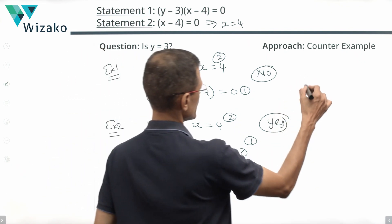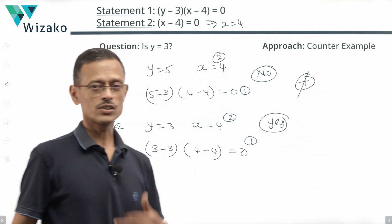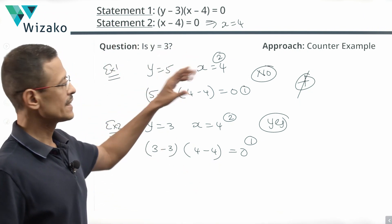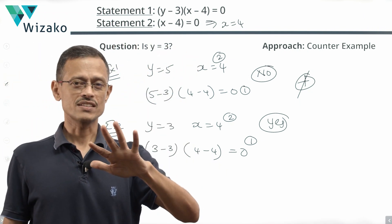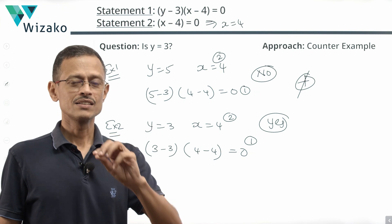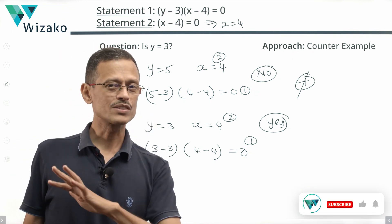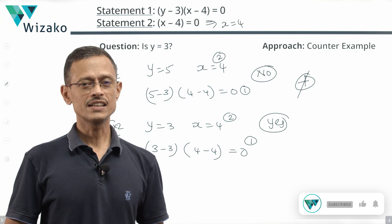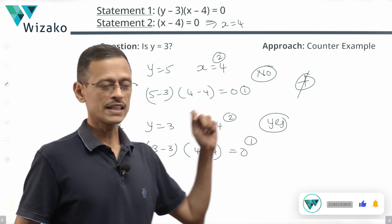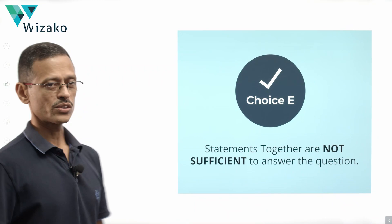Statements together are not sufficient, so Choice E is the answer. The crux of solving this question is understanding that when the product of two numbers is 0, at least one number is 0 — but it is not necessary that both numbers be 0. Choice E is the answer to this question.